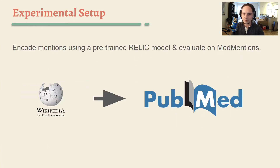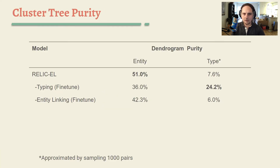We perform experiments using an entity linking model called RELIC, which is pre-trained on Wikipedia to resolve mentions of medical concepts in the MedMentions corpus, a corpus of annotated biomedical paper abstracts linked to the UMLS ontology. We evaluate the quality of the resulting cluster tree using dendrogram purity, which roughly measures the fraction of subtrees whose leaves all belong to the same cluster.